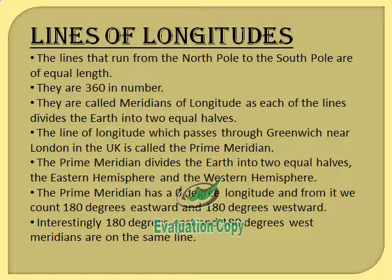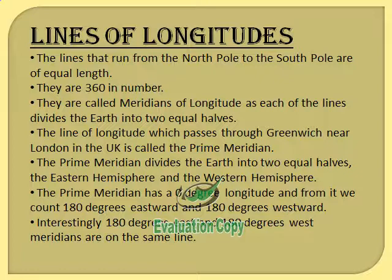Longitudes are 360 in number. In the previous image you saw there were two hemispheres — 180 degree east and 180 degree west. They are called meridians of longitude. Each line of longitude divides the earth into two equal halves. This is not the case with latitudes — only the equator divides the earth into two equal halves; the other latitude lines do not divide it into equal halves. But each longitude divides the earth into two equal halves.